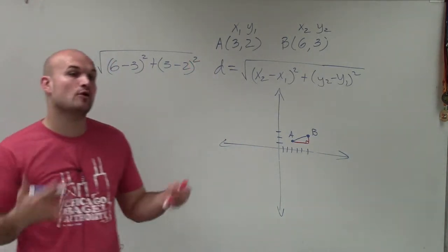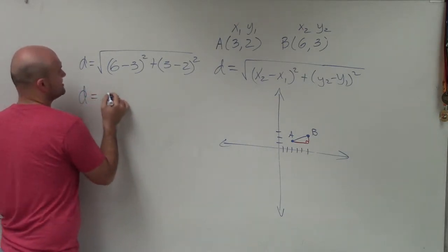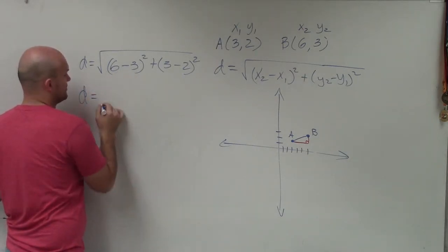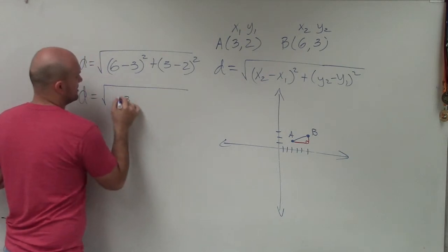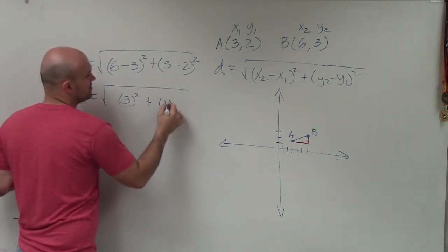Now I'm going to simplify and apply my order of operations. I need to simplify inside the parentheses first. So my distance equals 6 minus 3 is going to be 3. So it's going to be 3 squared, plus 3 minus 2 is 1. So that's going to be 1 squared.